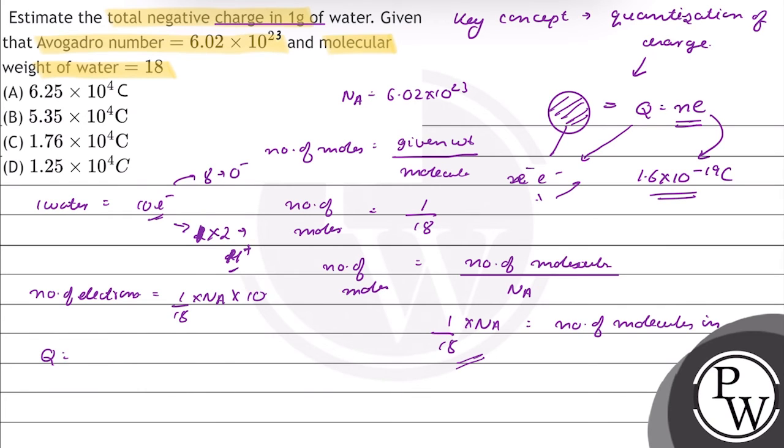Total charge Q equals number of electrons times charge on each electron: Q = (1/18) × Na × 10 × e, which is (1/18) × (6.02 × 10^23) × 10 × (1.6 × 10^-19) coulombs. This equals 3.44 × 10^23 × 1.6 × 10^-19, which equals 5.35 × 10^4 coulombs.